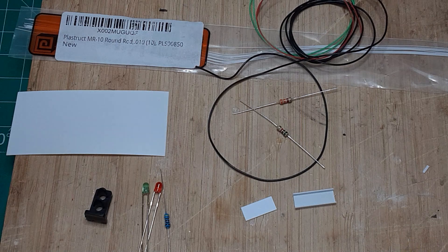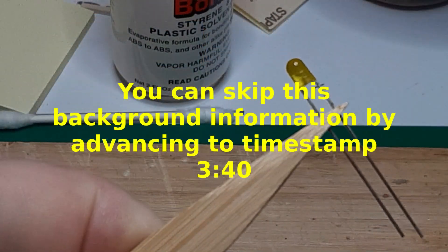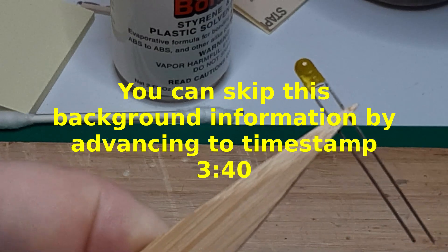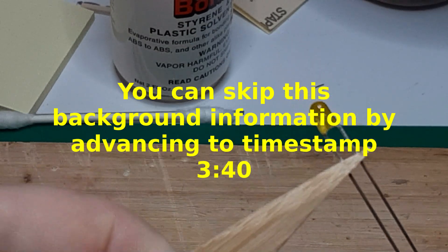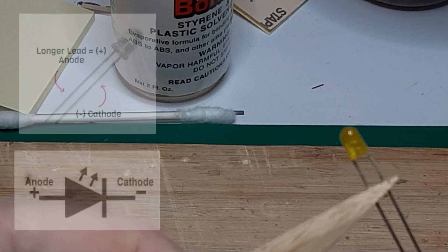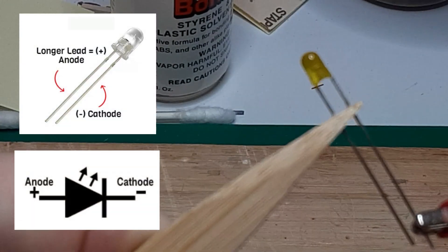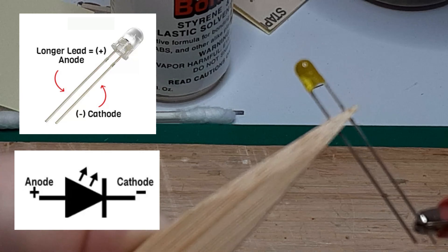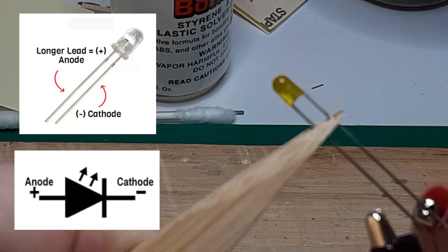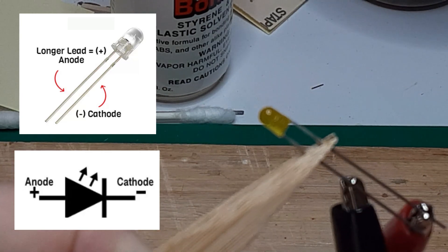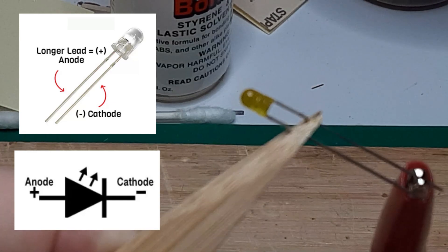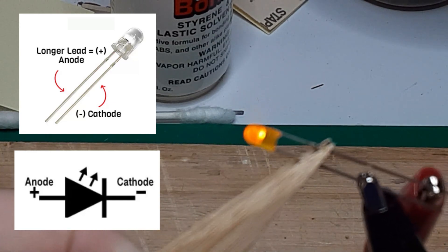Before I describe construction of the signals, I'd like to present some background information on LEDs in order to define some terminology. An LED has two connections, an anode and a cathode. The anode is almost always the longer of the two leads, and it must be connected to positive voltage. The cathode is the shorter lead, and it must be connected to ground.